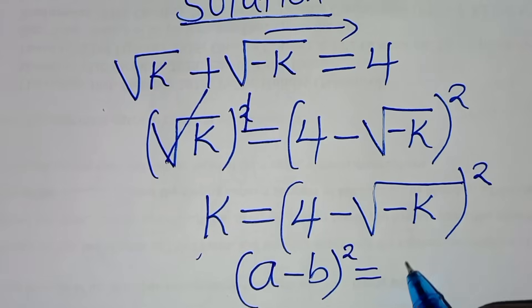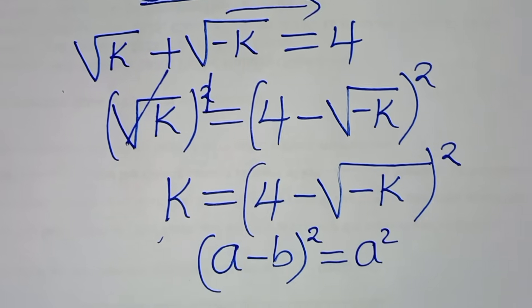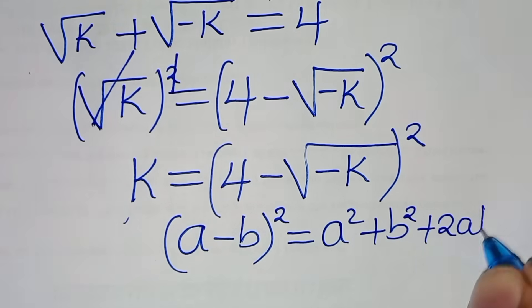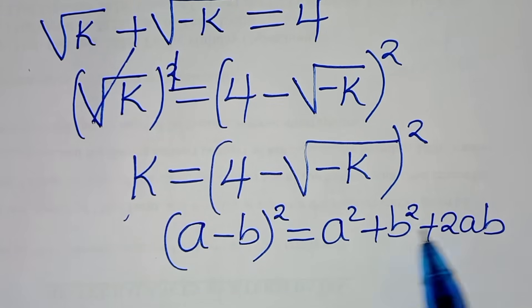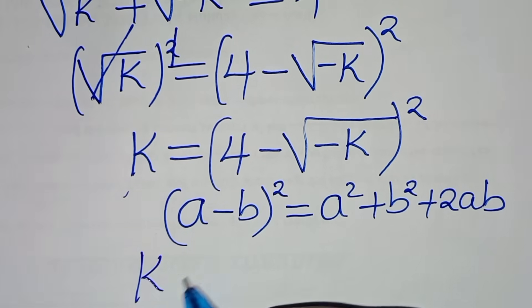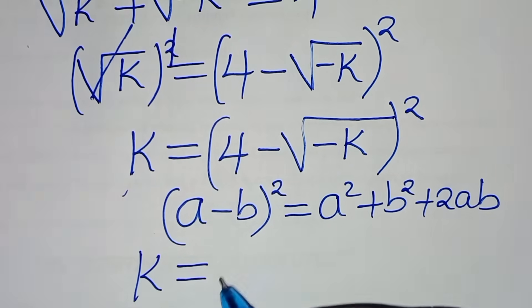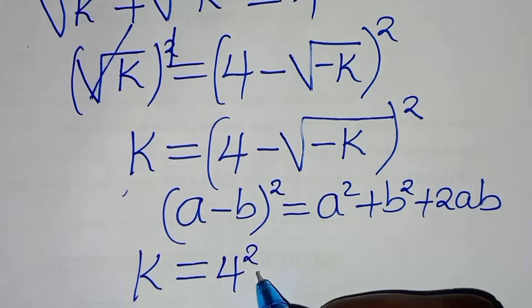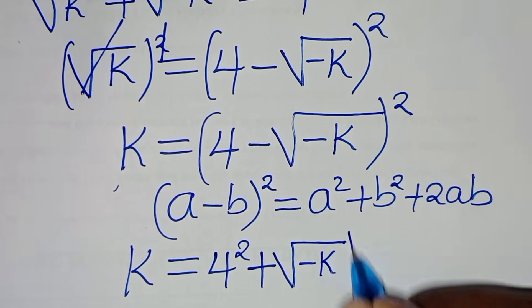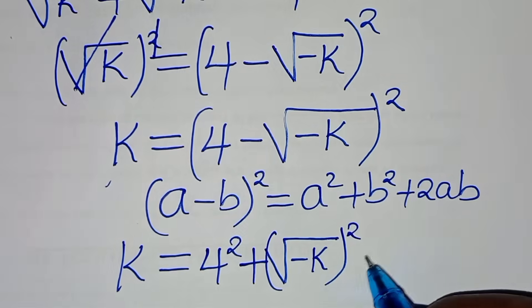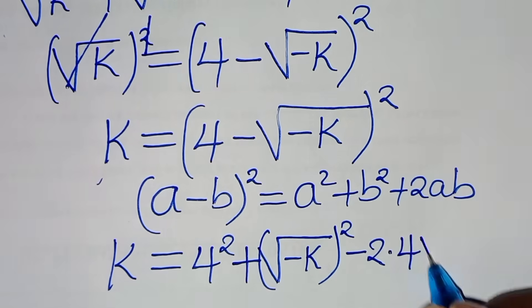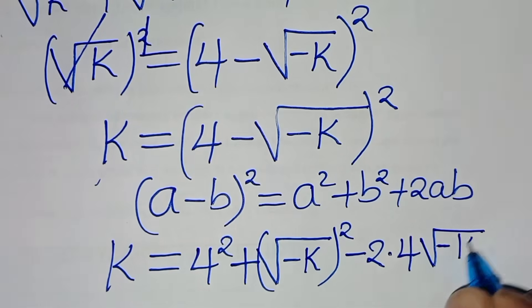Which we can express as a squared minus 2ab plus b squared. So let's apply this algebraic identity, so that k is equal to: we have 4 squared, plus we have square root of minus k squared, subtract 2 times 4 times square root of minus k.